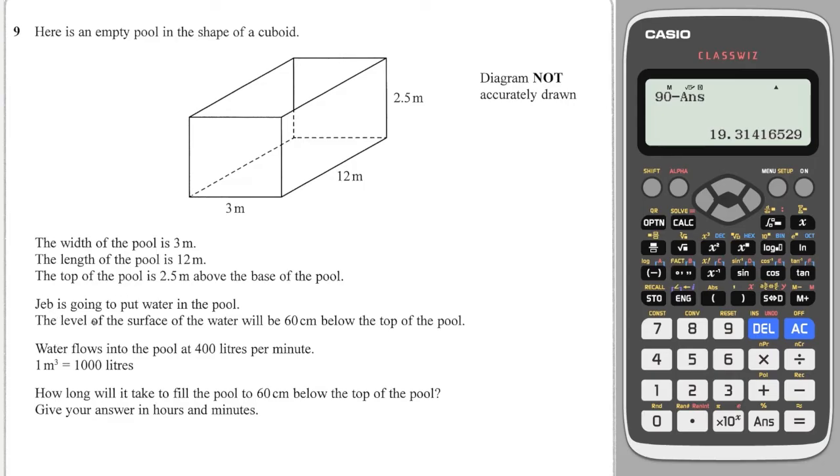We've got Jeb putting water into the pool, and he wants it to go 60 centimeters below the top of the pool, so it's going to go up to here, where the height will now be 1.9 meters, because that will be 60 centimeters taken off from the top of 2.5 meters. And it says water flows into the pool at 400 liters per minute, and how long will it take to fill the pool all the way up to the top?